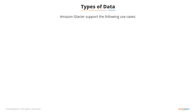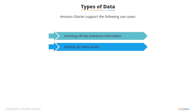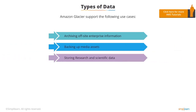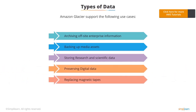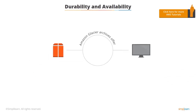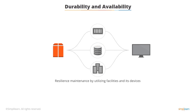AWS enables organizations to store data in a location that is convenient for their businesses, and organizations tend to utilize Amazon Glacier to support use cases such as archiving off-site enterprise information, backing up media assets, storing research and scientific data, preserving digital data, and replacing magnetic tapes. Amazon Glacier archives offer an average annual resilience of 99.999999999%, maintained by continuously utilizing several facilities and devices within each facility to store the data.